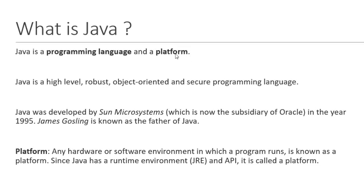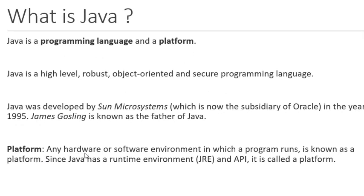What do we mean by platform? Platform means any hardware or software environment in which a program runs. Java also provides a hardware or software environment where we can develop and deploy programs. The runtime environment provided by Java is called JRE — Java Runtime Environment — and it has all the APIs used for executing Java programs.